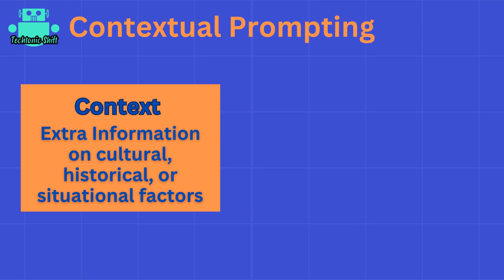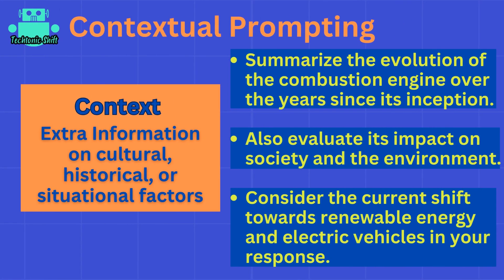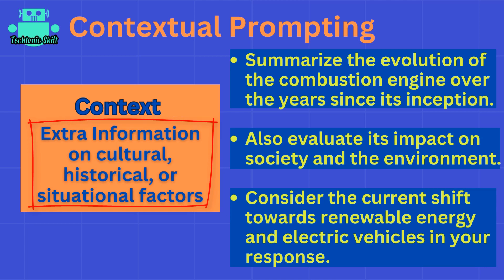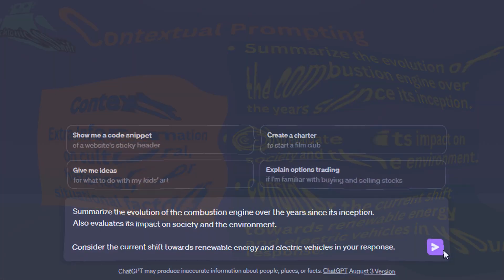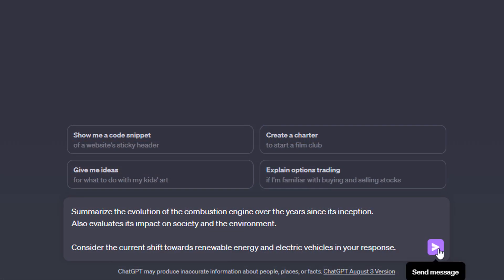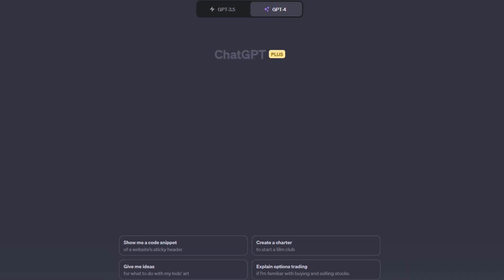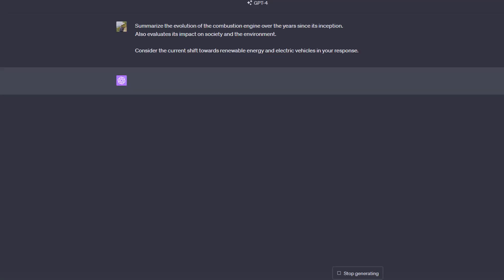For example, you could have a prompt like this. Here, I want ChatGPT to generate a summary of the evolution of the combustion engine over the years since its inception. But I also specifically want ChatGPT to take the current shift towards renewable energy and electric vehicles into account. That's where I provide some extra historical and situational context.